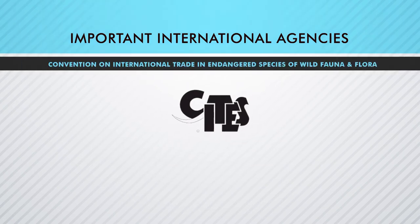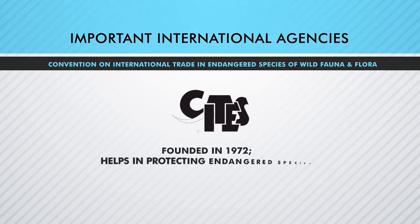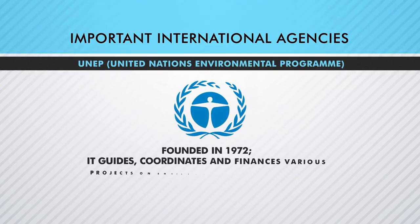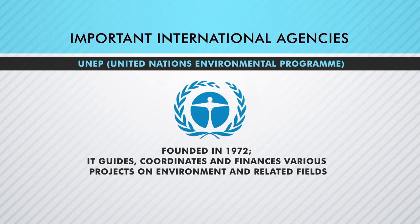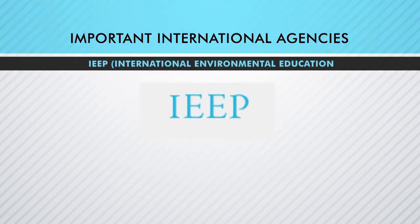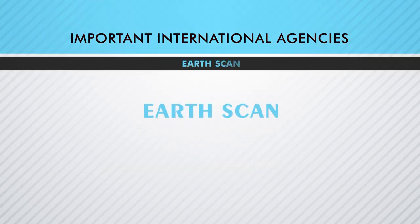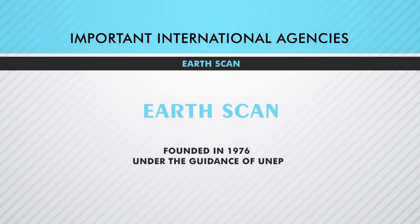Then there is the Convention on International Trade of Endangered Species in Wild Fauna and Flora (CITES) 1972, which basically helps in protecting endangered species. There is also UNEP — United Nations Environment Programme — 1972, which guides various projects on environment and related fields. Then there is IEEP — International Environmental Education Programme — started in 1975, which undertakes the responsibility of educating and sponsoring seminars and conferences on environments. And there is EARTHSCAN, an agency under the guidance of UNEP, founded in 1976, also working for the improvement of nature.